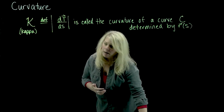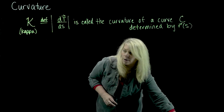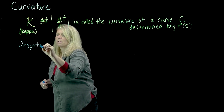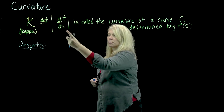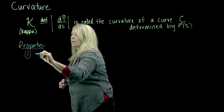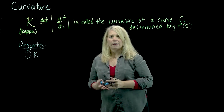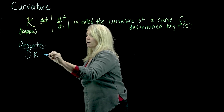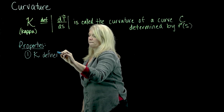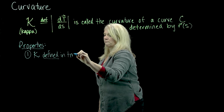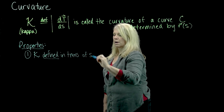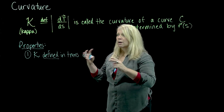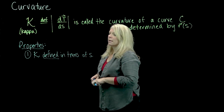Some important properties: curvature is defined in terms of s, the arc length parameterization, which means it is independent of a particular fast or slow kind of motion along the curve — it's really based on the geometry of the curve. Anything defined in terms of the geometry of the curve is about how the curve is shaped, not whether you're going fast or slow.